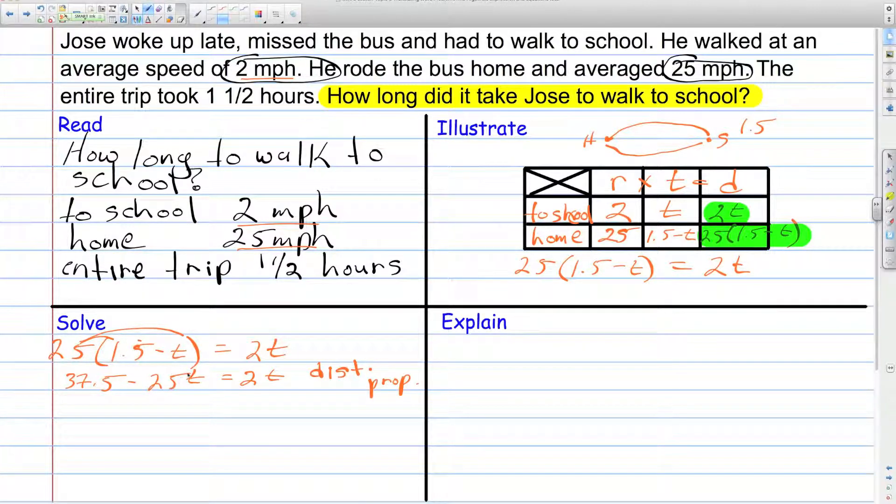Now, since I have variables on both sides, I'm going to get rid of the minus 25t by adding 25t to both sides. So, 25t's on the left cancel, leaving 37.5 equal to 27t. And to justify that step, that's the addition property of equality.